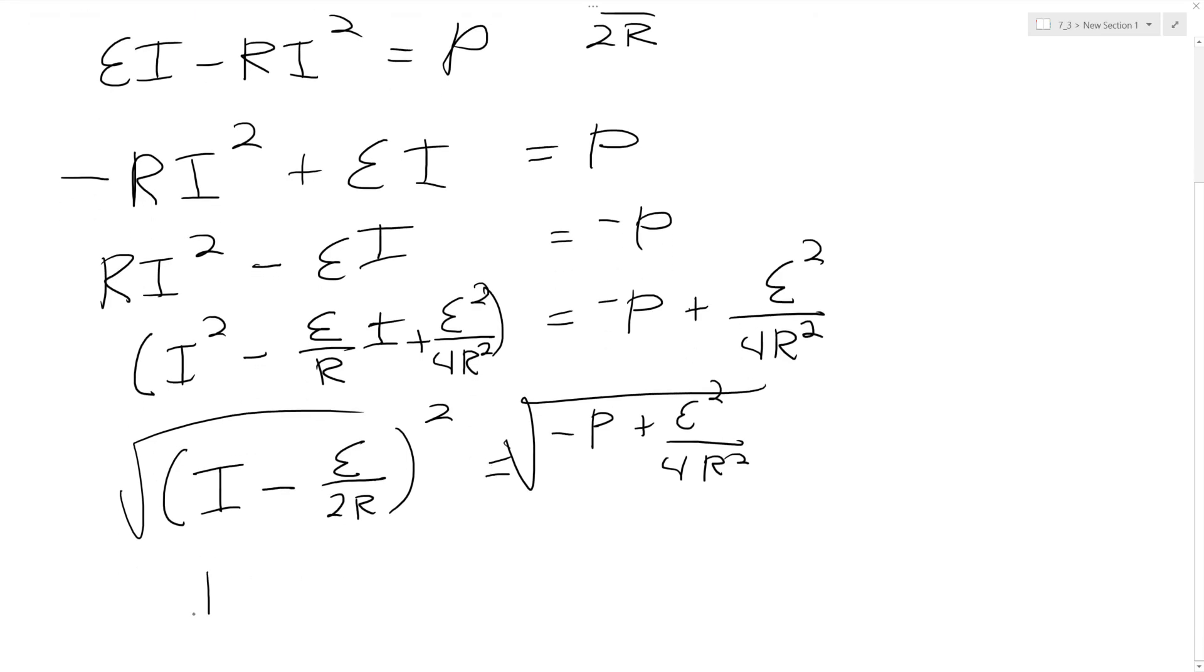And then I'm left with I minus E over 2R equals the square root of negative P plus E squared over 4R squared. And finally we just get I is equal to,